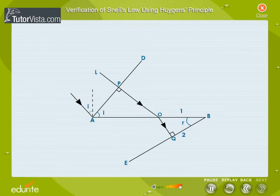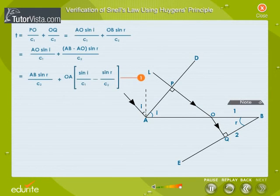The total time taken by the ray to travel from the incident wave front to the refracted wave front is T equals PO by C1 plus OQ by C2, that is equal to AO sine I by C1 plus OB sine R by C2. This time should be independent of all the incident rays.